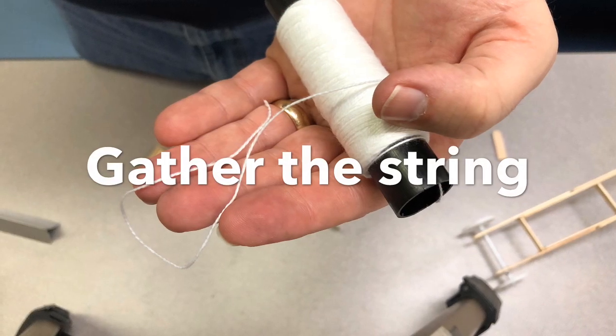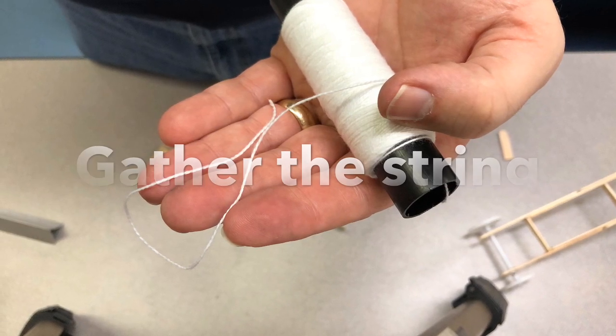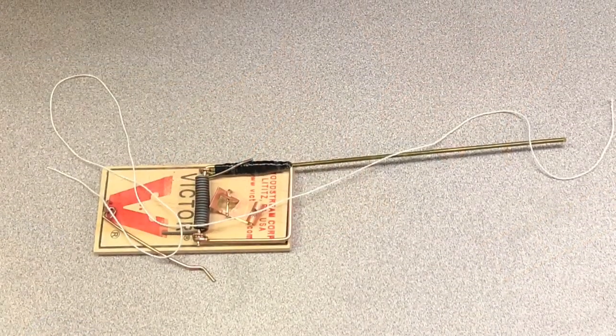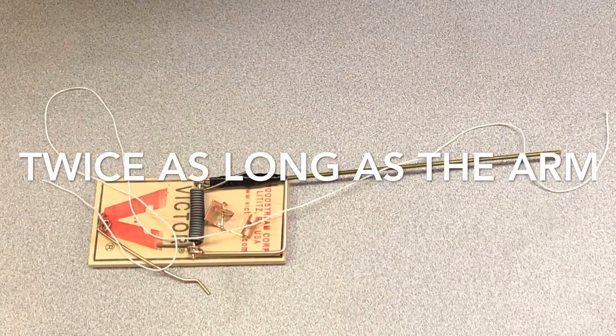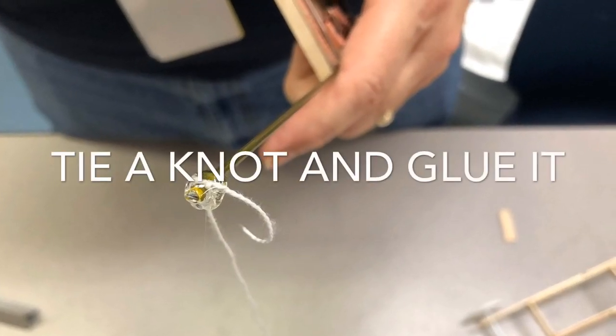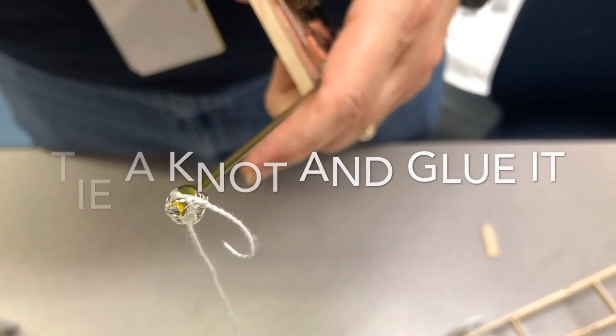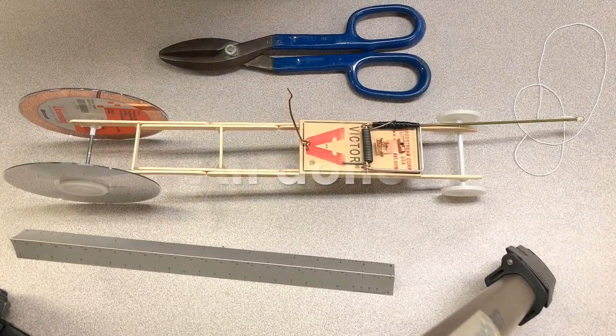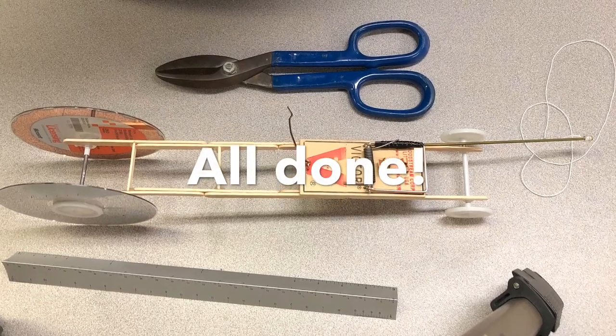The string should be twice as long as the arm. That way it will get a good pull. Tie it in a knot and glue it so it doesn't move around. Congratulations, you're now ready to race.